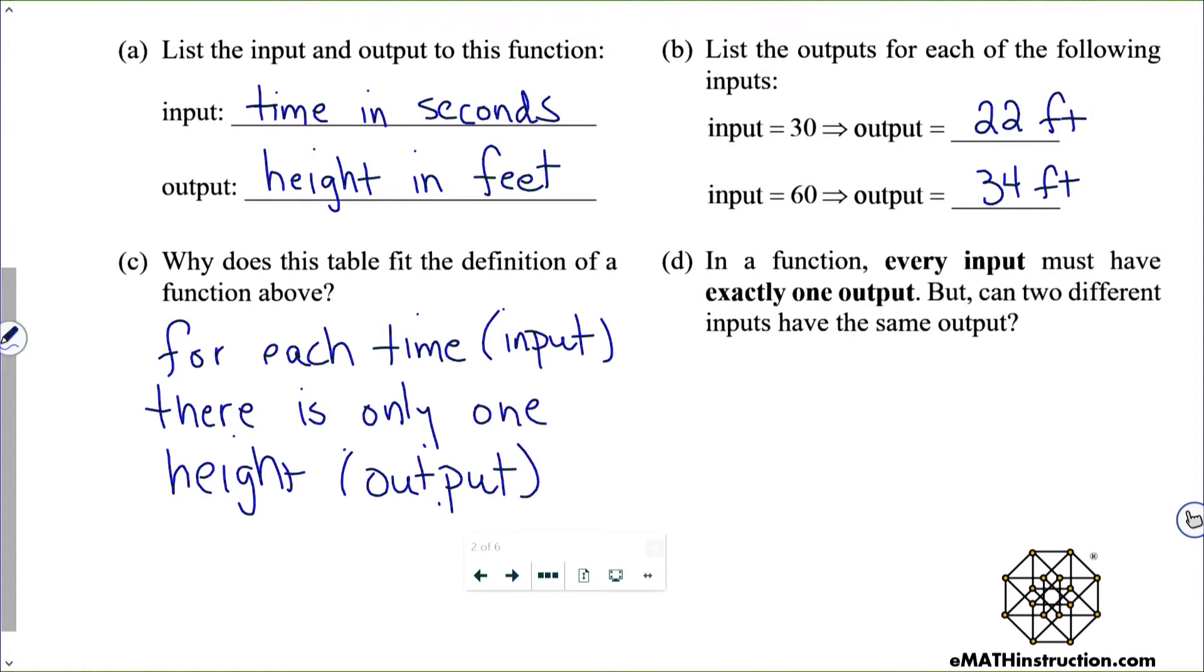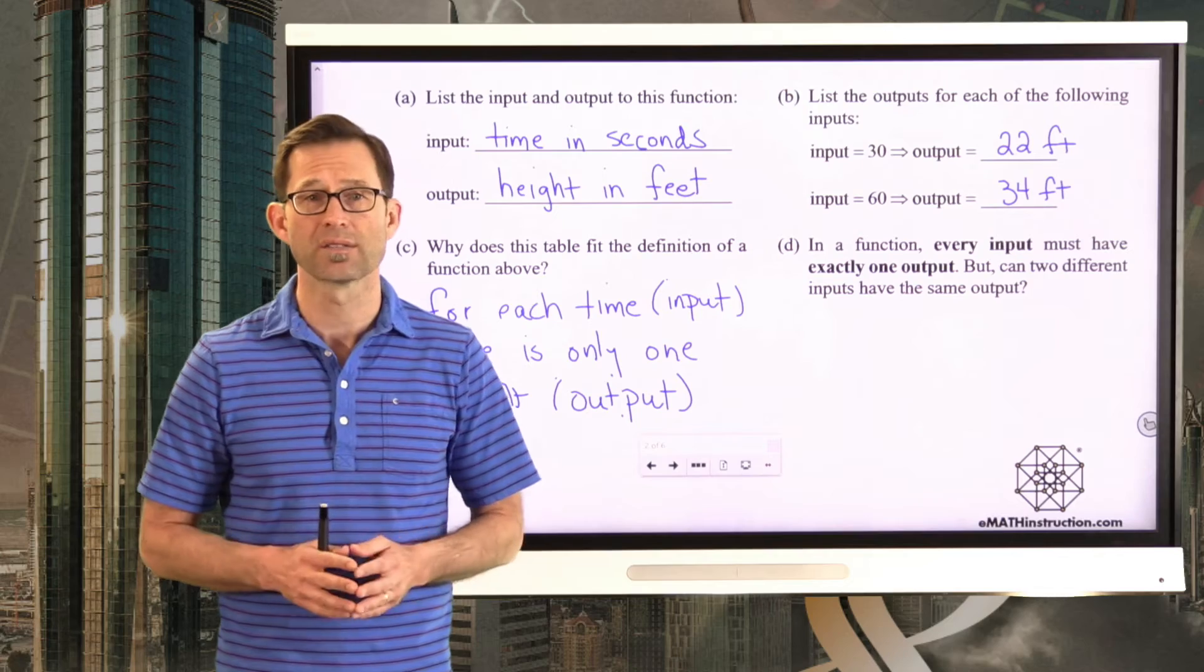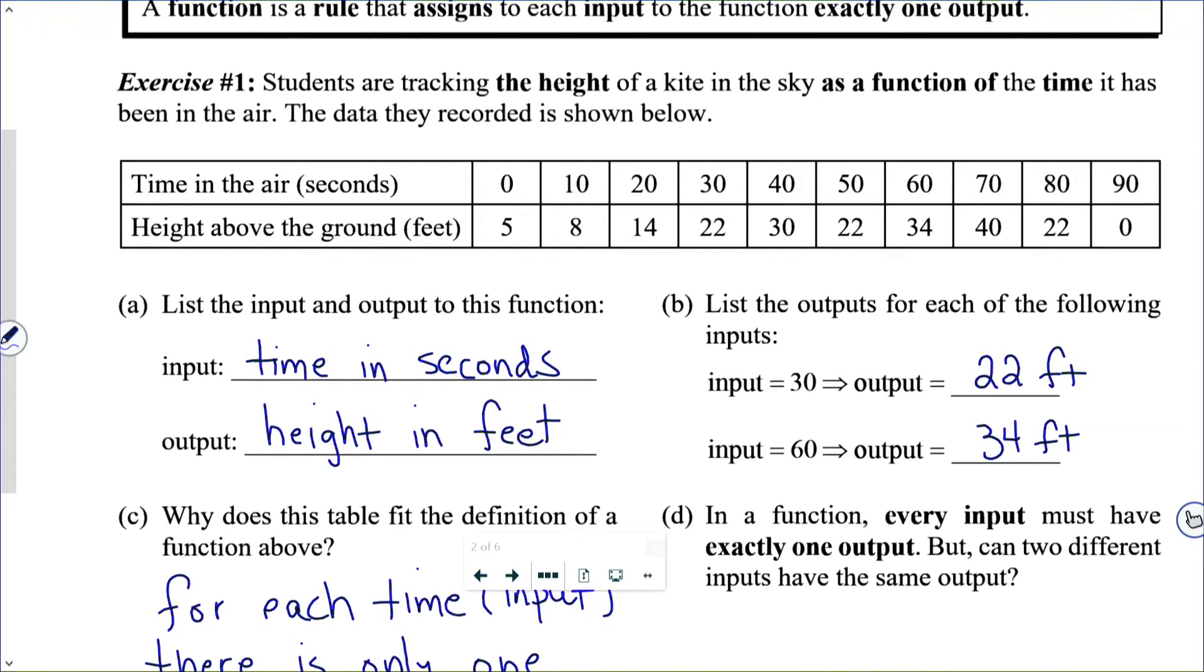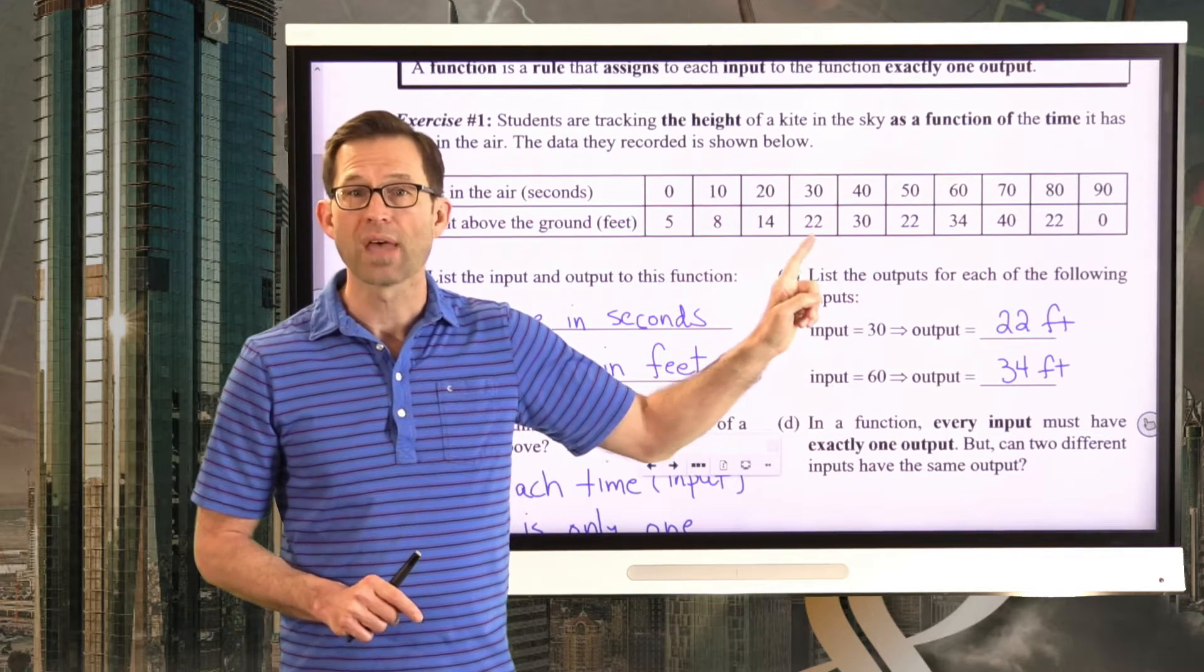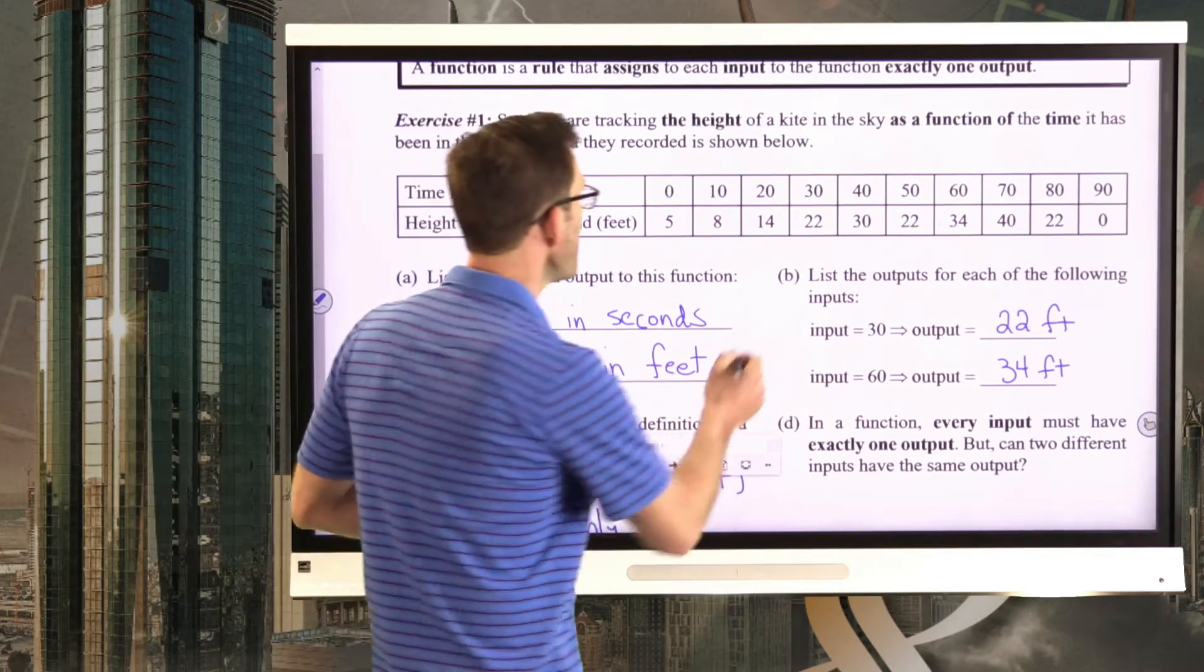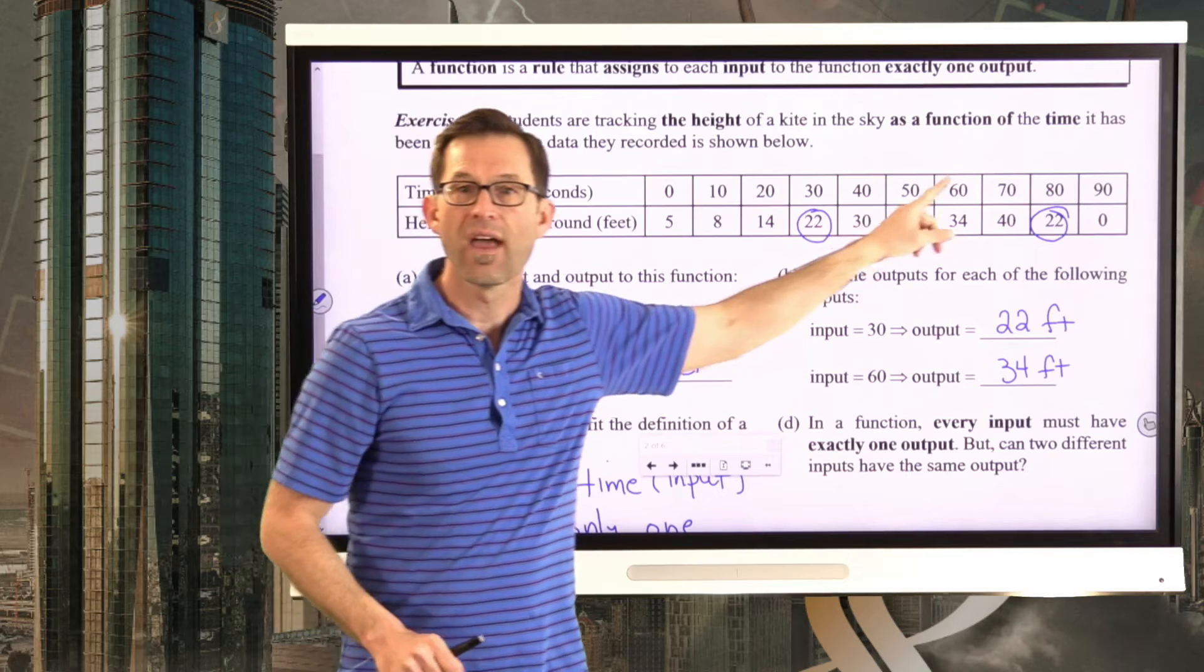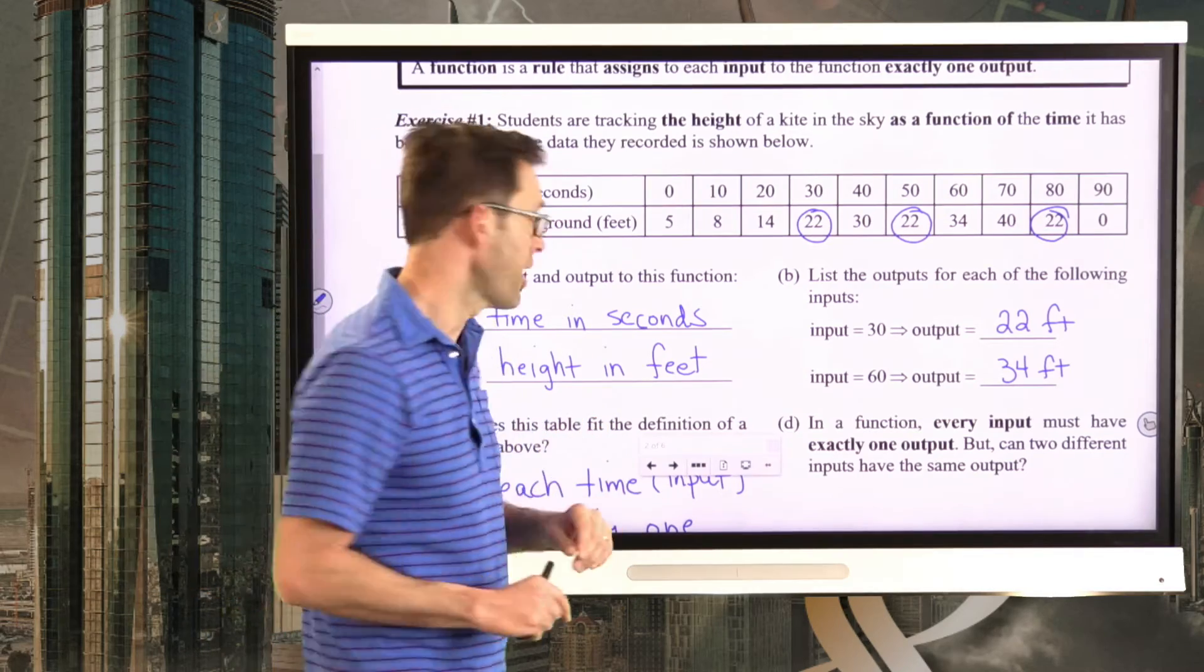In a function, every input must have exactly one output. But can two different inputs have the same output? Well, take a look at the table and see if that can happen, at least in this case. Pause the video for a moment. Now, again, I want you to remember the idea of a function is if I go to an input like 30, there's absolutely only one output that corresponds to that input. But when we scan this table of outputs, what we see is at 30 seconds, 50 seconds, and 80 seconds, the height is 22 feet. And that is completely okay.